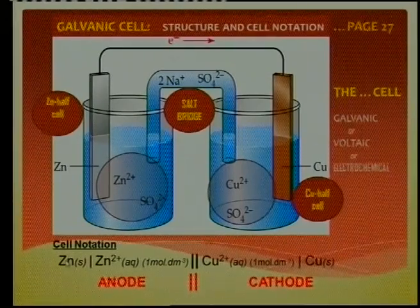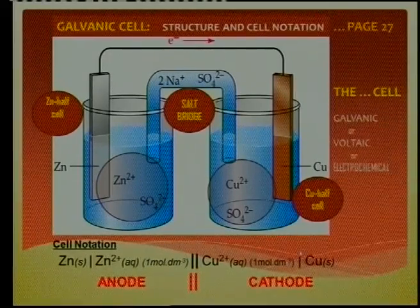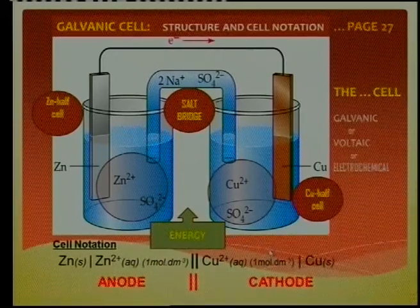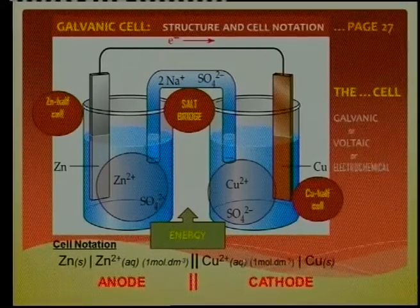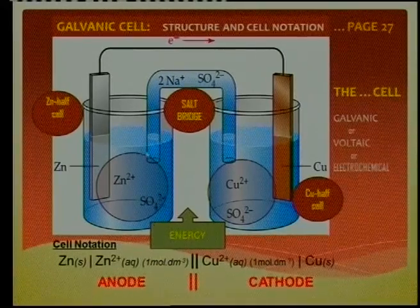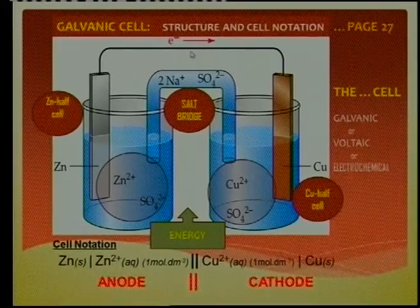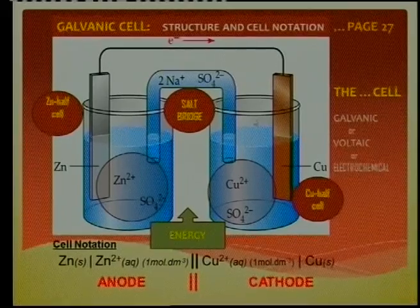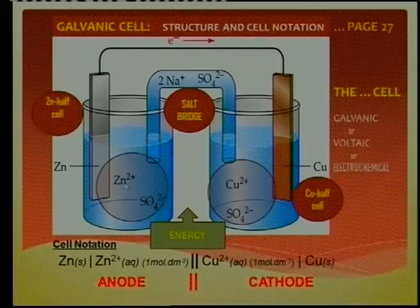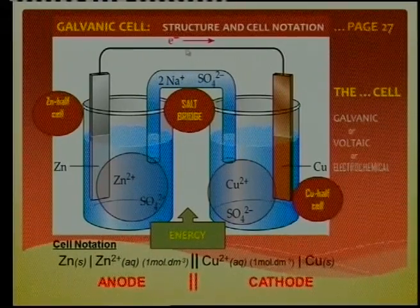You can actually see the half reactions: zinc becomes zinc ions, and copper ions become copper. The energy conversion in this galvanic cell is that we get chemical energy — the energy in chemicals, in bonds, in movement — and we put it onto electrons. Electrons carry it around and we can use it, like in a torch battery.